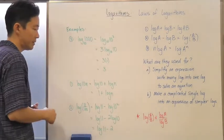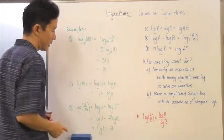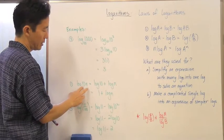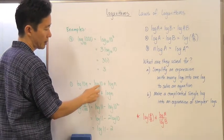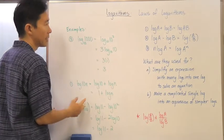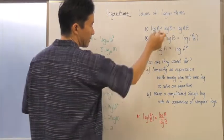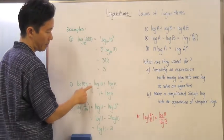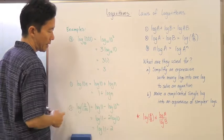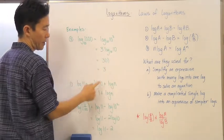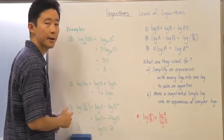Now let's look at law one — the product rule. If you have log of 10 times n, that equals log 10 plus log n. Starting from the combined form and expanding it, we get log 10 plus log n. And since log base 10 of 10 equals 1, we can simplify that to 1 plus log n.